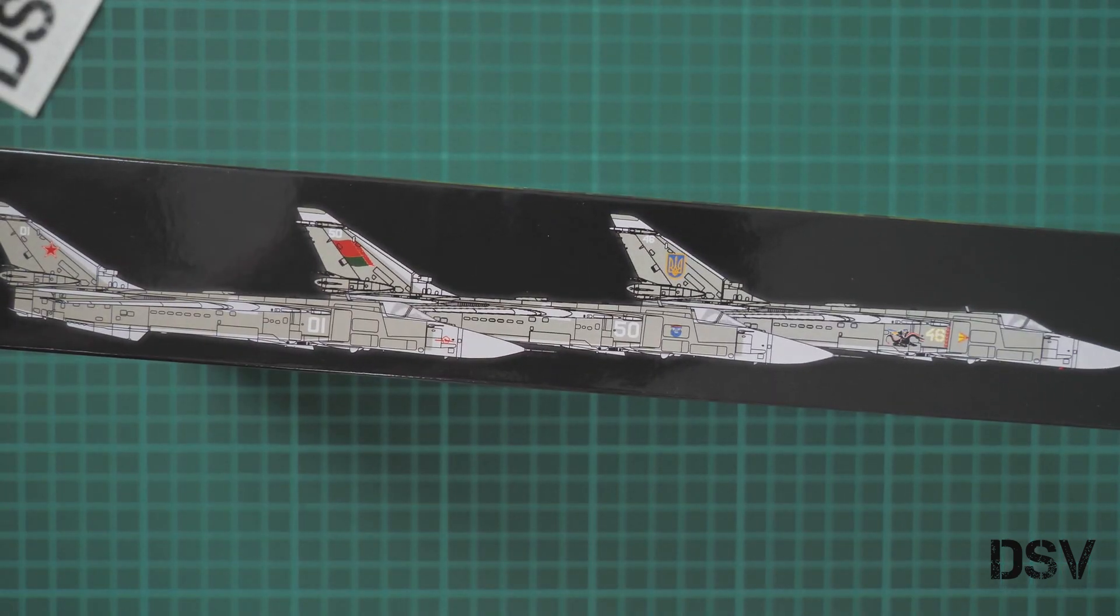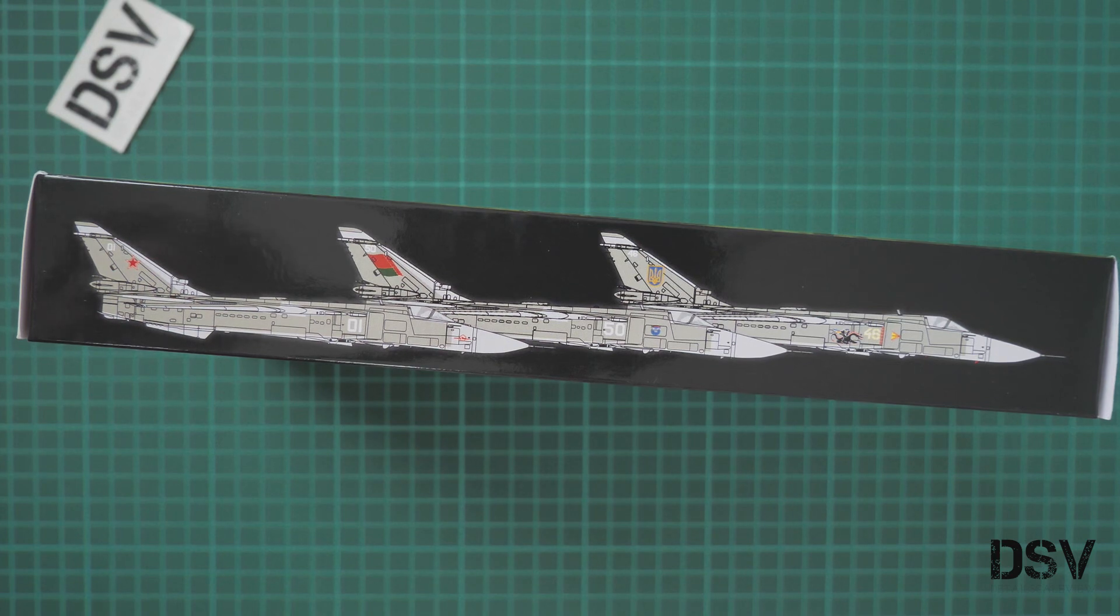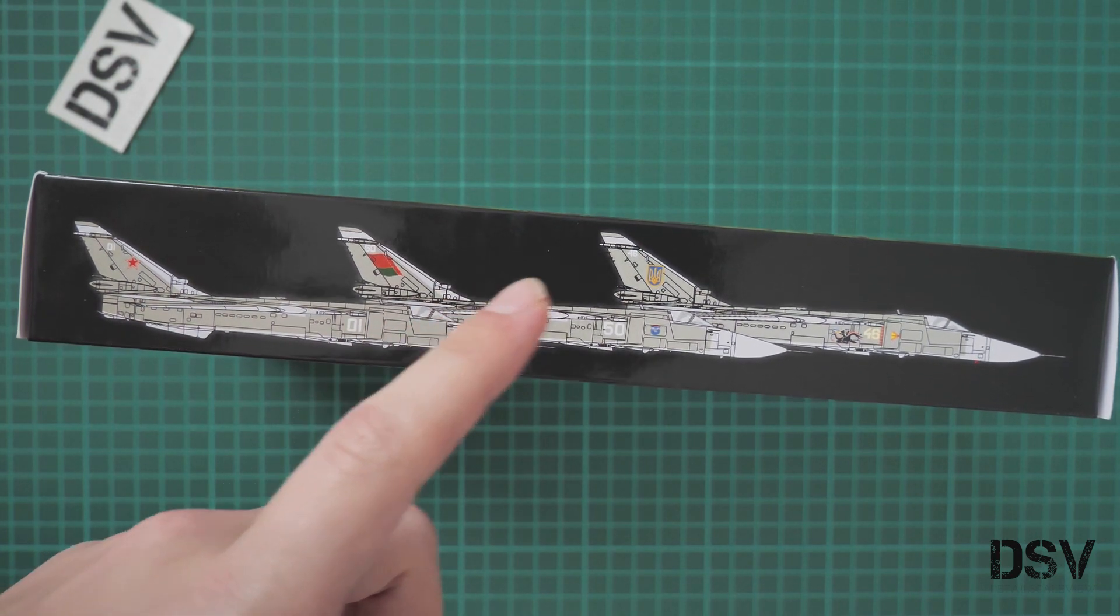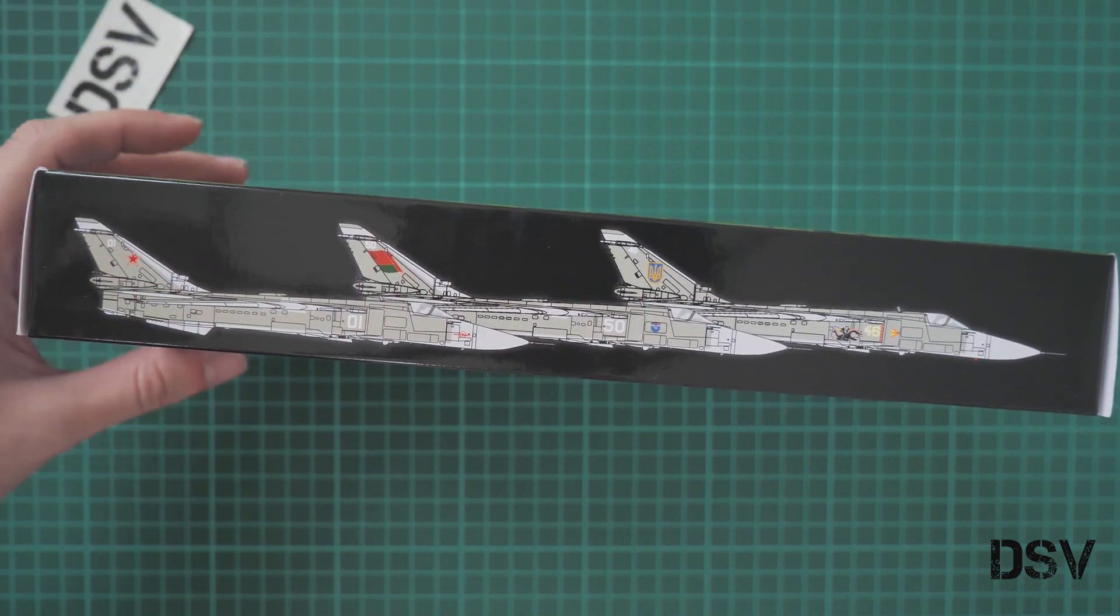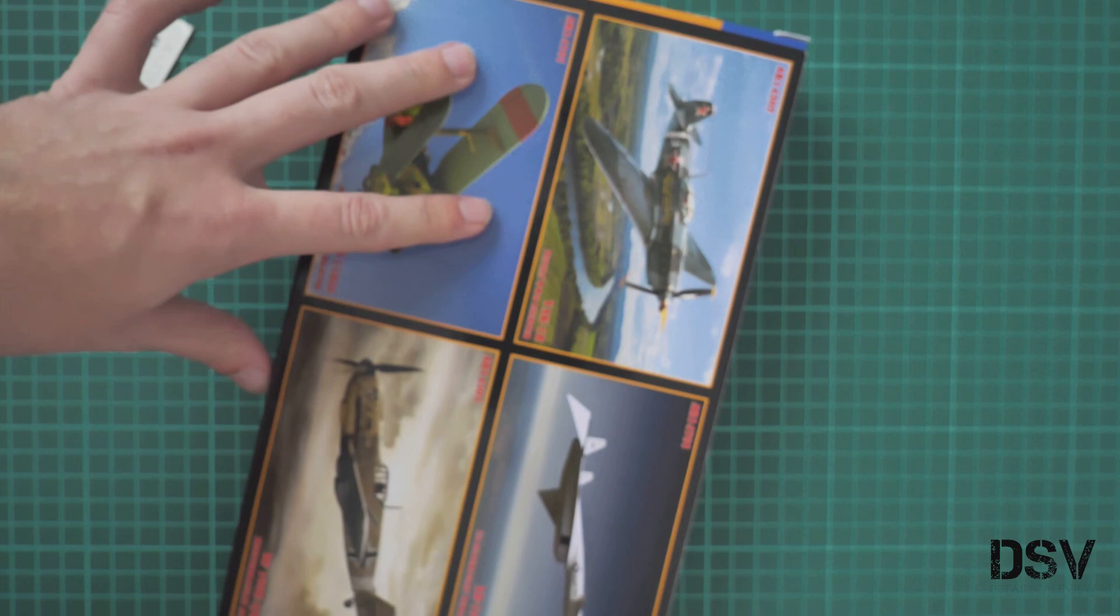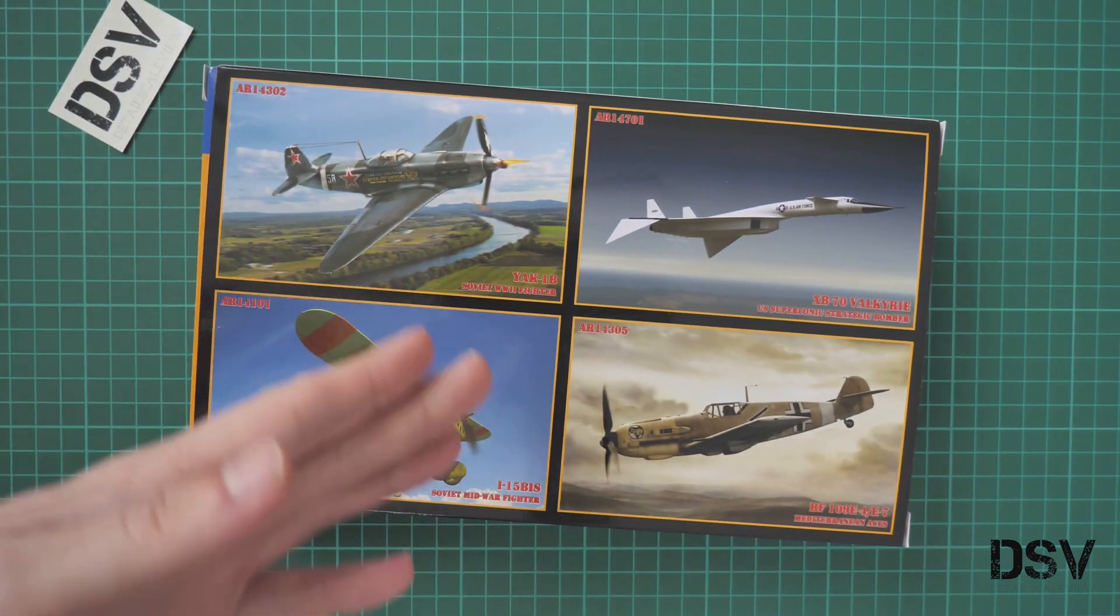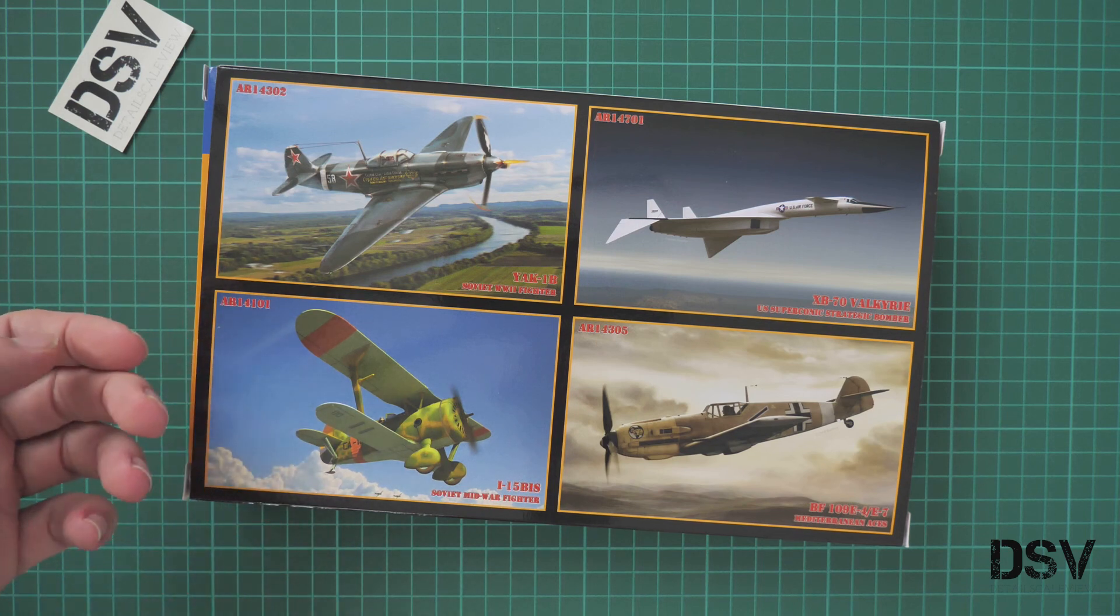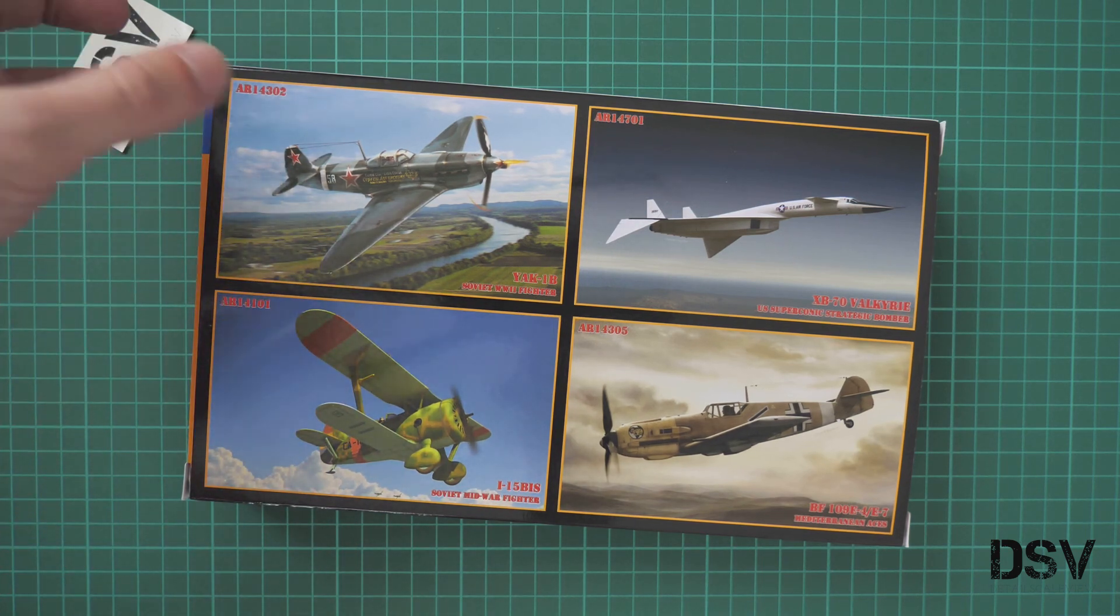On the side we can see three marking options included in this kit. We have Belarusian, Ukrainian, and Russian marking options, but we'll have to check the assembly manual. On the rear side, instead of a marking guide, we have pictures of other kits available from this manufacturer. I'm not sure why it was decided to do like this.